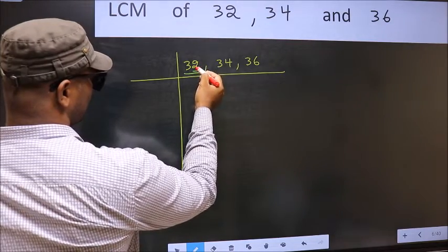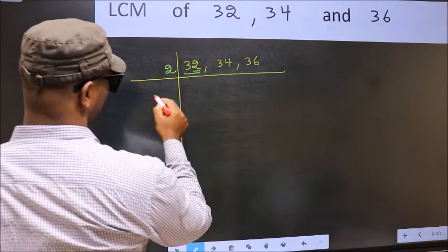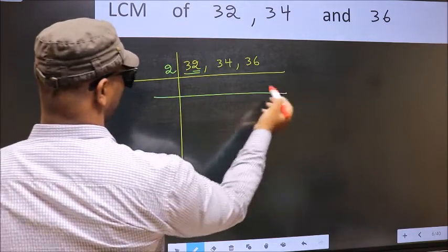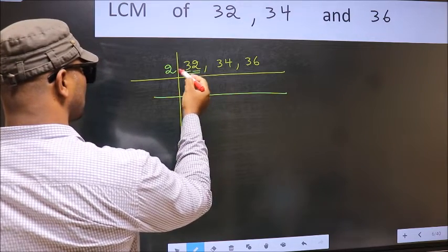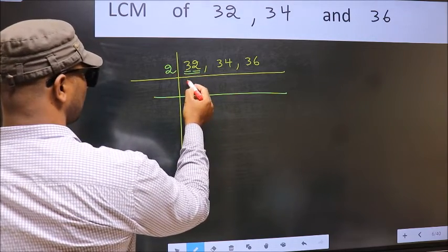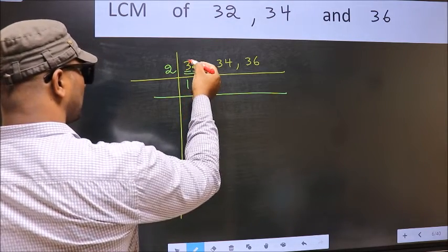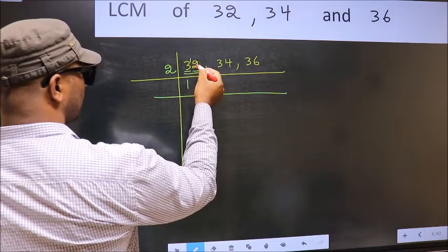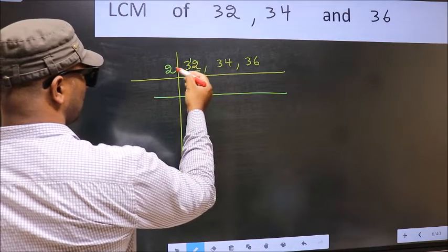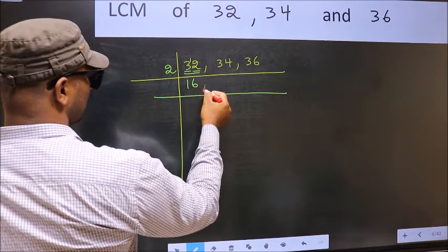Last digit 2, even, so take 2. First number 3 — a number close to 3 in the 2 table is 2, one 2's 2. 3 minus 2 is 1, carried forward: 12. When do we get 12 in the 2 table? 2, 6's 12.